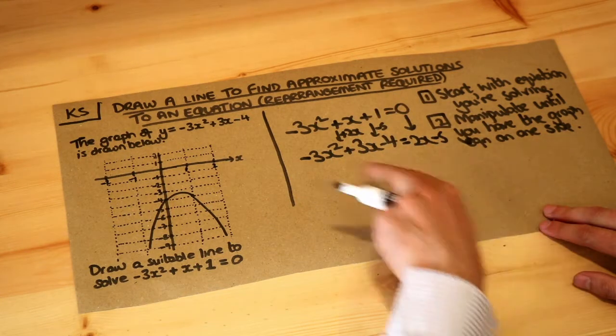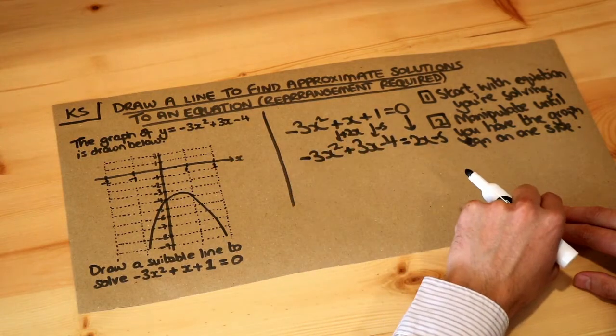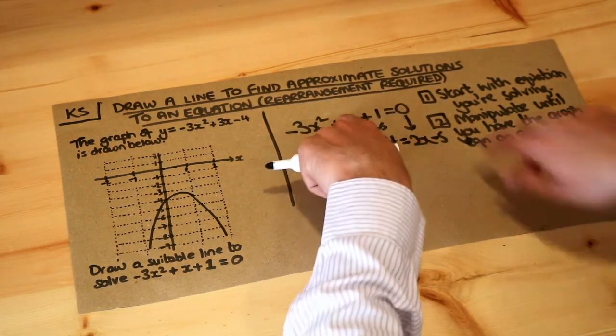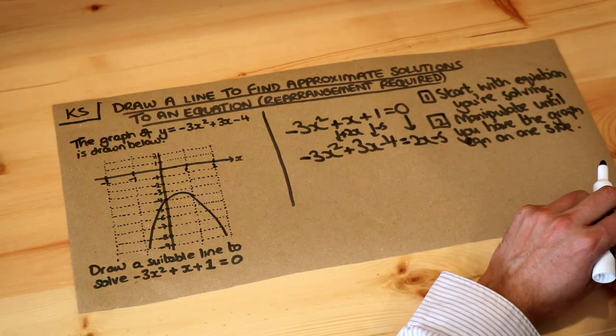Now we've got the graph equation on one side, but we're still solving the original equation because we've done the same thing to both sides. It's still actually the same equation, just manipulated a bit.